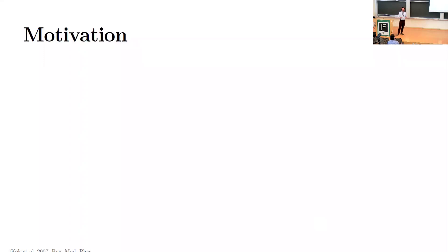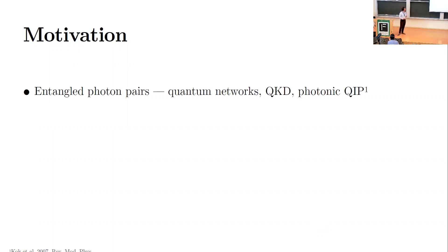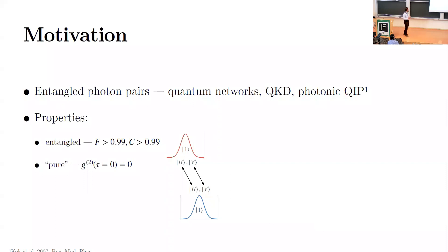Entangled states of light are a useful resource for a number of different applications. For our sources, quantum networks are an interesting one for doing things like entanglement swapping. In order to actually produce entangled photon pairs they need to have certain properties. For bipartite entanglement, the two photons need to have quantum correlations between them, and likewise the two signals from your source should be pure, which basically means they should be single Fock states.